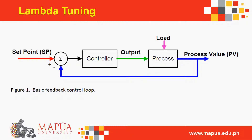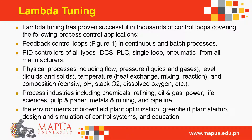Here is the basic feedback control loop. Lambda tuning has proven successful in thousands of control loops covering: feedback control in continuous and batch processes, PID controllers of all types (DCS, PLC, single loop, pneumatic), physical processes including flow, pressure, level, temperature and composition, and process industries including chemicals, refining, oil and gas, power, life sciences, pulp and paper, metals and mining, and pipeline — in brownfield optimization, greenfield design, simulation, and education.